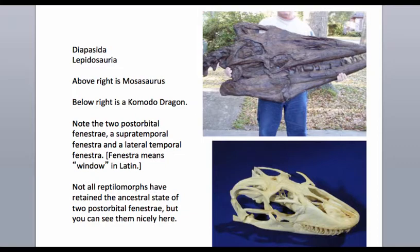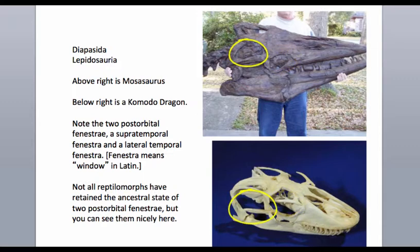Looking first at the diapsids: these are both Lepidosaurs. On top is the Mosasaurus, a gigantic aquatic Lepidosaur — neither a plesiosaur nor an ichthyosaur, but another large aquatic Lepidosaur that returned to the seas. On the lower right is a modern Lepidosaur — a Komodo dragon, which is a squamate. In both animals you can see two post-orbital fenestrae — the location of the ocular orbit and two holes behind it — for both the Komodo dragon and the Mosasaur.